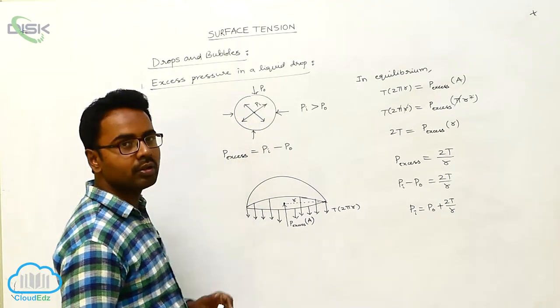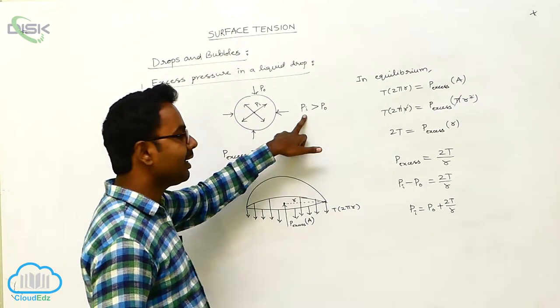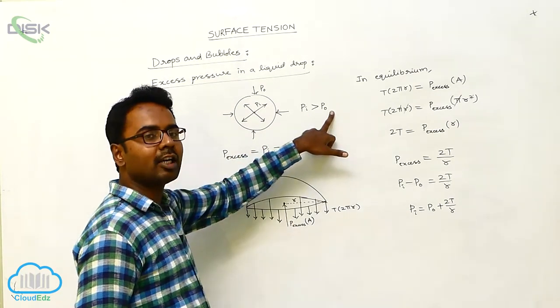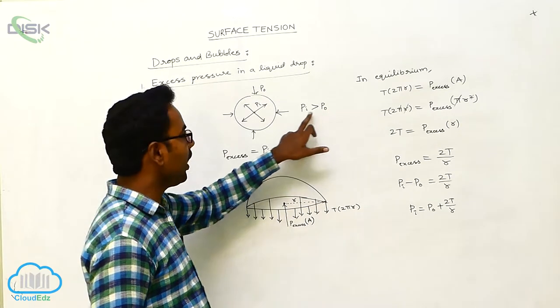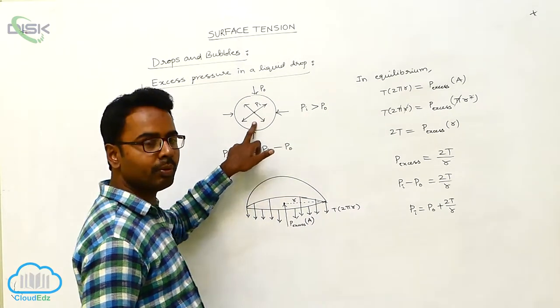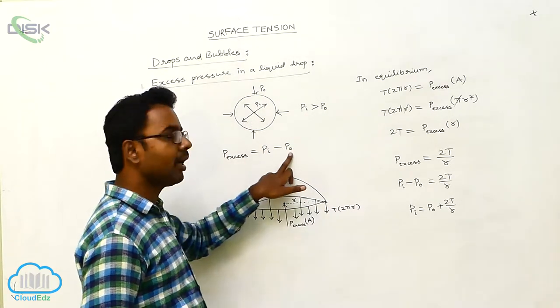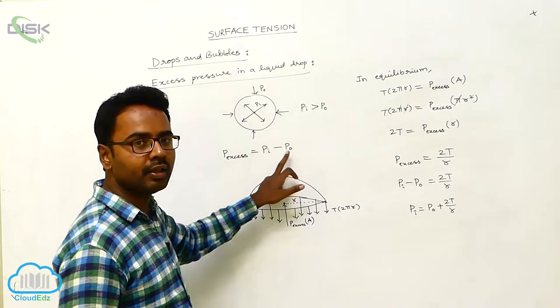It is retaining in the same size means the pressure inside the liquid drop is greater than the atmosphere which is acting on it. So the excess pressure inside the liquid drop is Px equals Pi minus P0. It is derived like this.